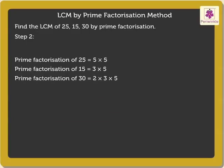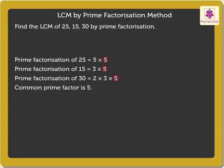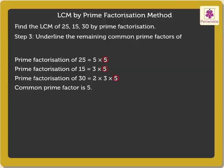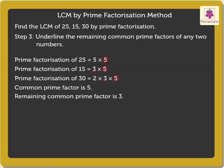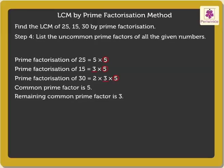Step 2: Circle the common prime factors of all the given numbers. Here, the common prime factor is 5. Step 3: Underline the remaining common prime factors of any two numbers. Here, we get the remaining common factor as 3. Step 4: List the uncommon prime factors of all the given numbers. Finally, the uncommon factors are 2 and 5.